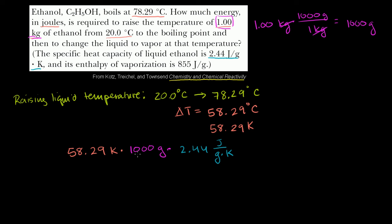So here we're doing 58 degrees, 1,000 grams. You just multiply it, the units cancel out. So you have Kelvin canceling out with Kelvin. You have grams canceling out with grams.